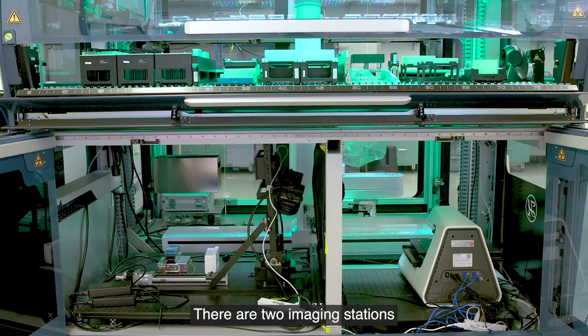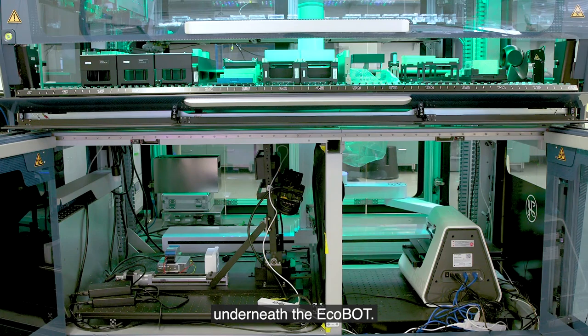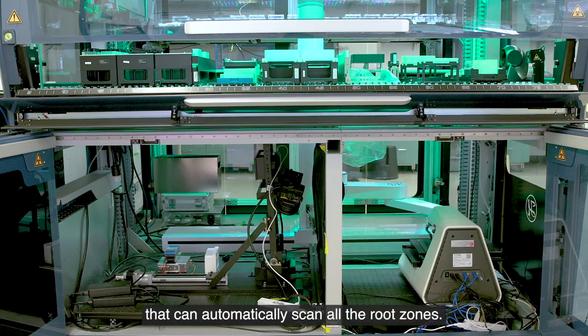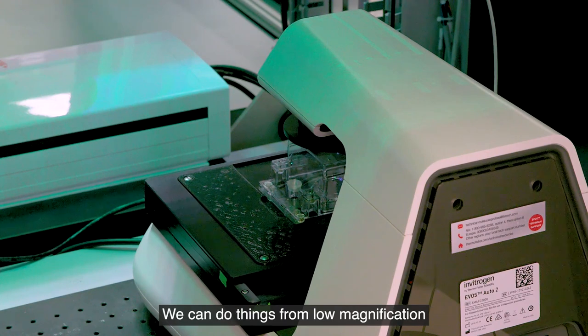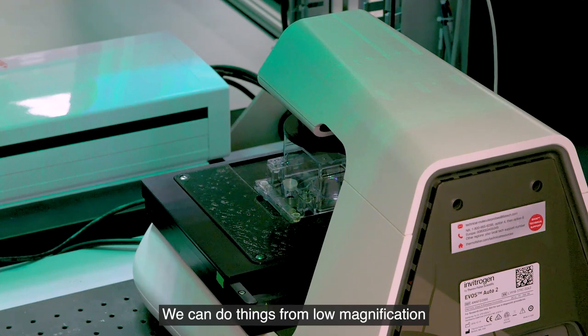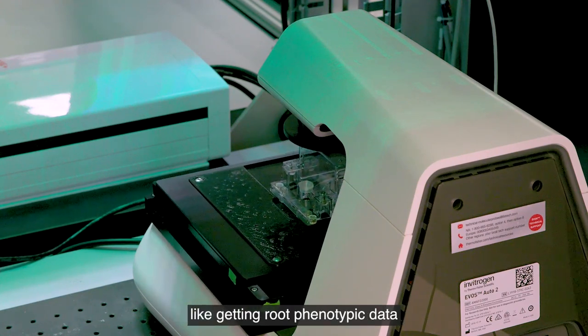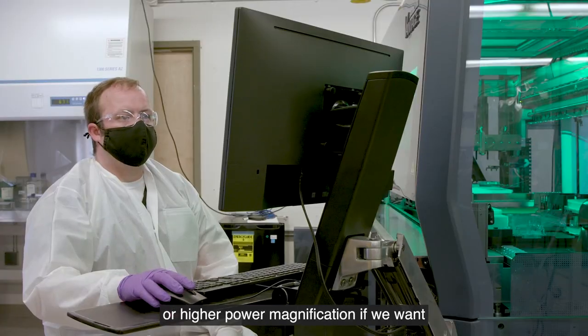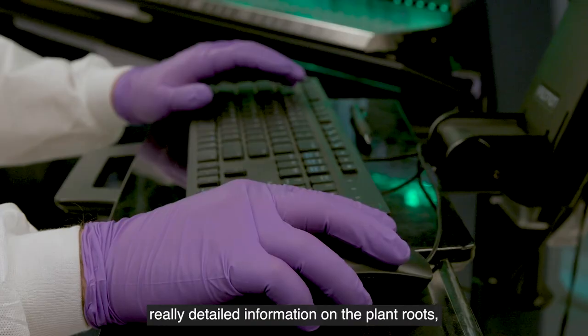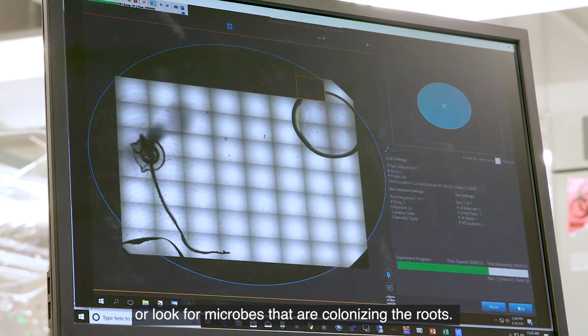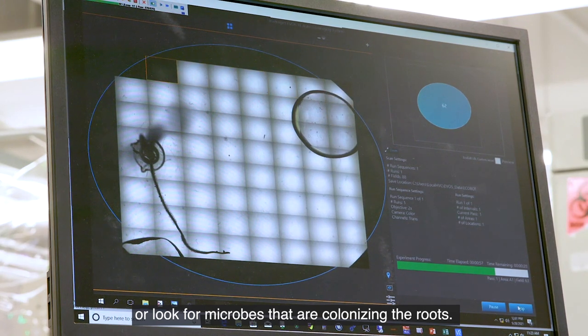There are two imaging stations underneath the ECOBOT. One is an inverted microscope that can automatically scan all the root zones. We can do things from low magnification like getting root phenotypic data or higher power magnification if we want really detailed information on the plant roots or look for microbes that are colonizing the roots.